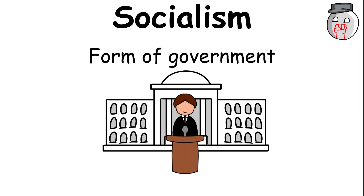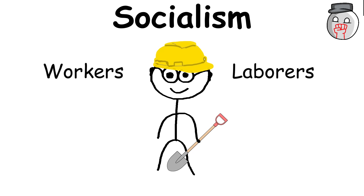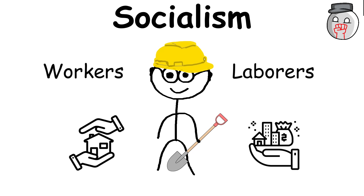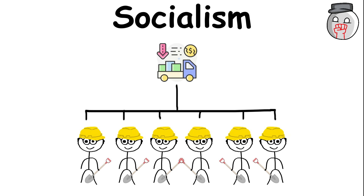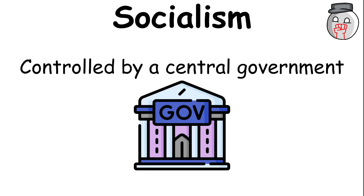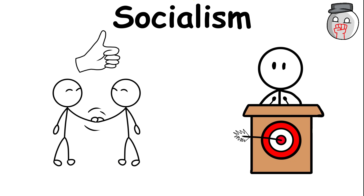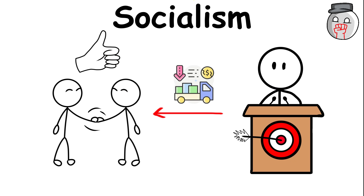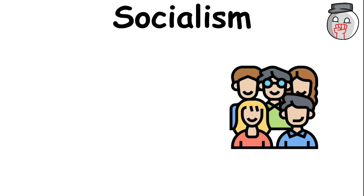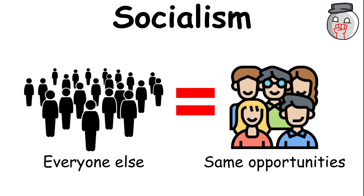Socialism is a form of government wherein the workers or laborers are allowed to own property, but the distribution of goods and services is controlled by a central government. The government's goal is to distribute all of the goods and services equally to ensure everyone in the country has the same opportunities as everyone else.